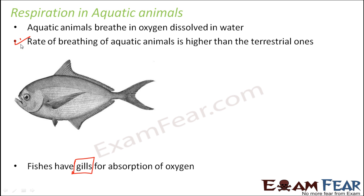An interesting thing is that the rate of breathing of aquatic animals is higher than that of terrestrial animals — aquatic animals breathe faster. Since they live in water, and the amount of oxygen available in water is less compared to air, these aquatic animals need to breathe really fast to get the required amount of oxygen into their body.